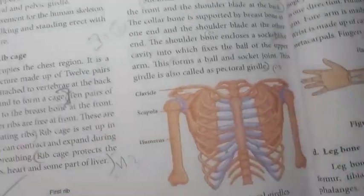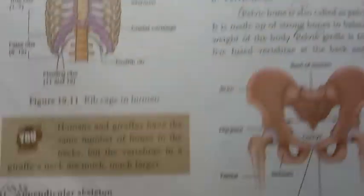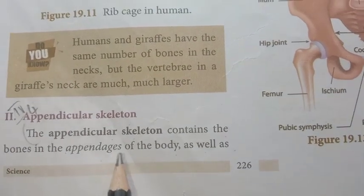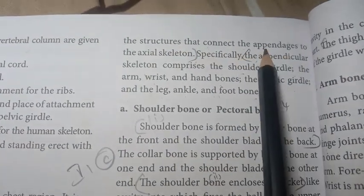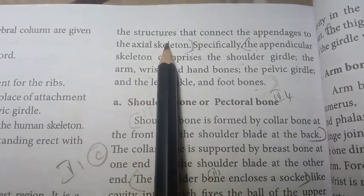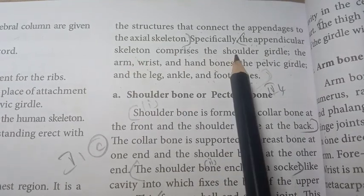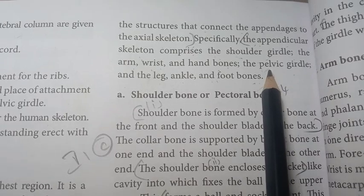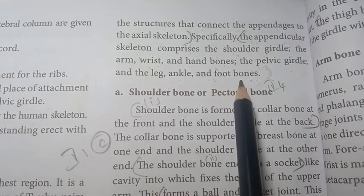Appendicular skeleton: The appendicular skeleton contains the bones in the appendages of the body as well as the structures that connect the appendages to the axial skeleton. It comprises the shoulder girdle, the arm, wrist and hand bones, the pelvic girdle and the leg, ankle and foot bones.